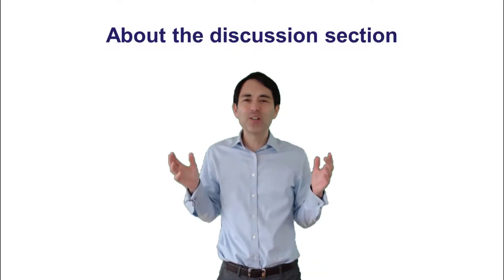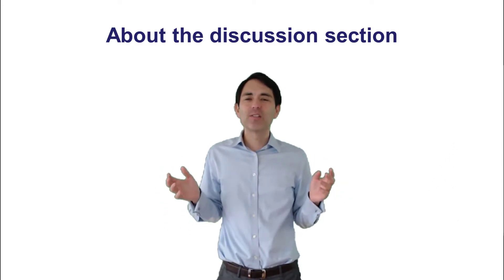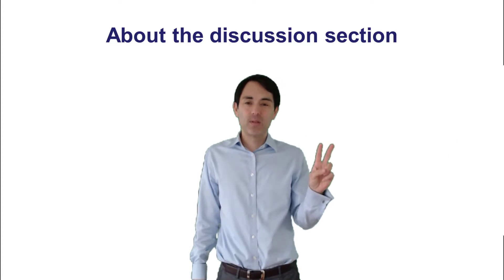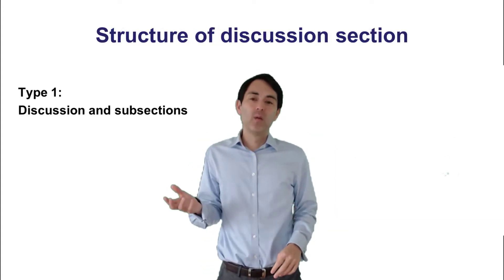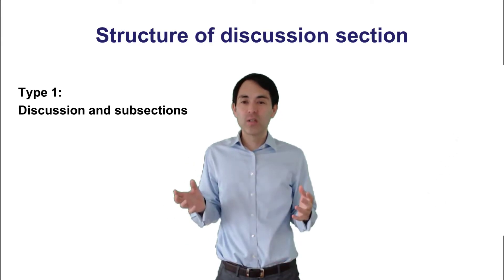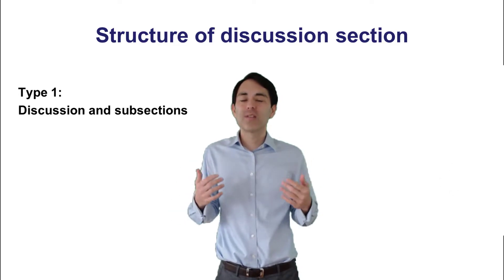How to write your discussion section? Essentially, you could say there are two different types of discussion section. Type 1 would be a discussion with many organized subsections, and then maybe you could also add a conclusion section at the end.